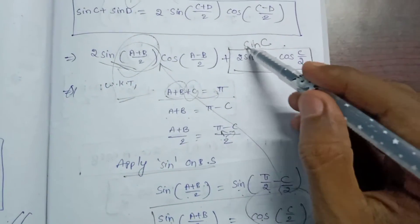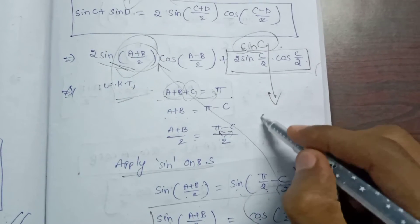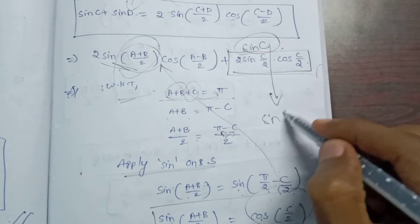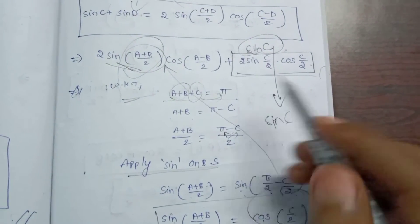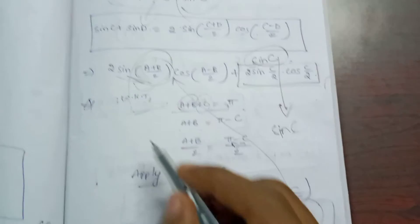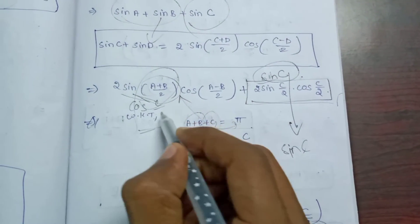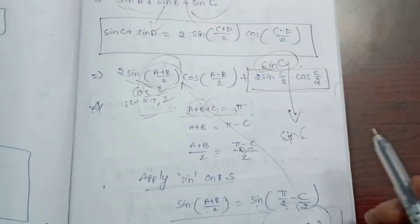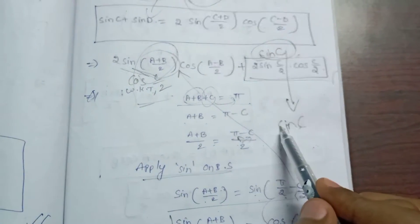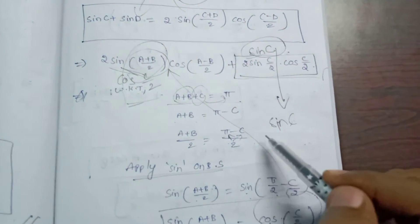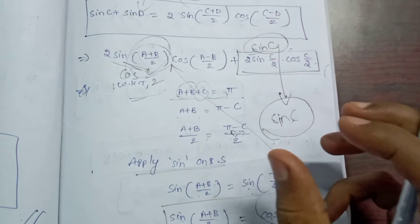Now we handle sin C. Since sin C equals 2·sin(C/2)·cos(C/2), we can take cos(C/2) as a common factor from both terms.